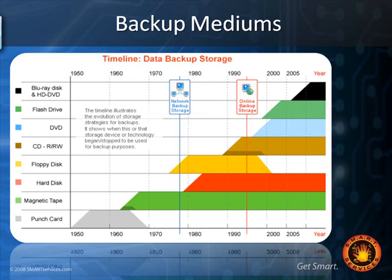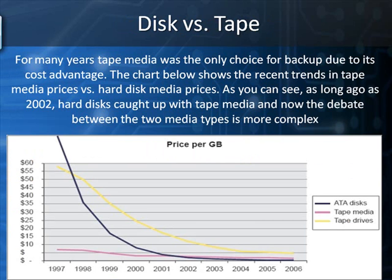Looking at the different backup mediums, there's a great graph here showing the history of data backups. Gone are the days of punch cards, but tapes have been around for a very long time — since way before computers were really computers — and are still commonly used today. Hard drives have been used for backups ever since they came out. Floppy disks aren't really used anymore because they're so small. CDs, DVDs, and Blu-rays are picking up — they're fast and cheap but don't hold a lot of data.